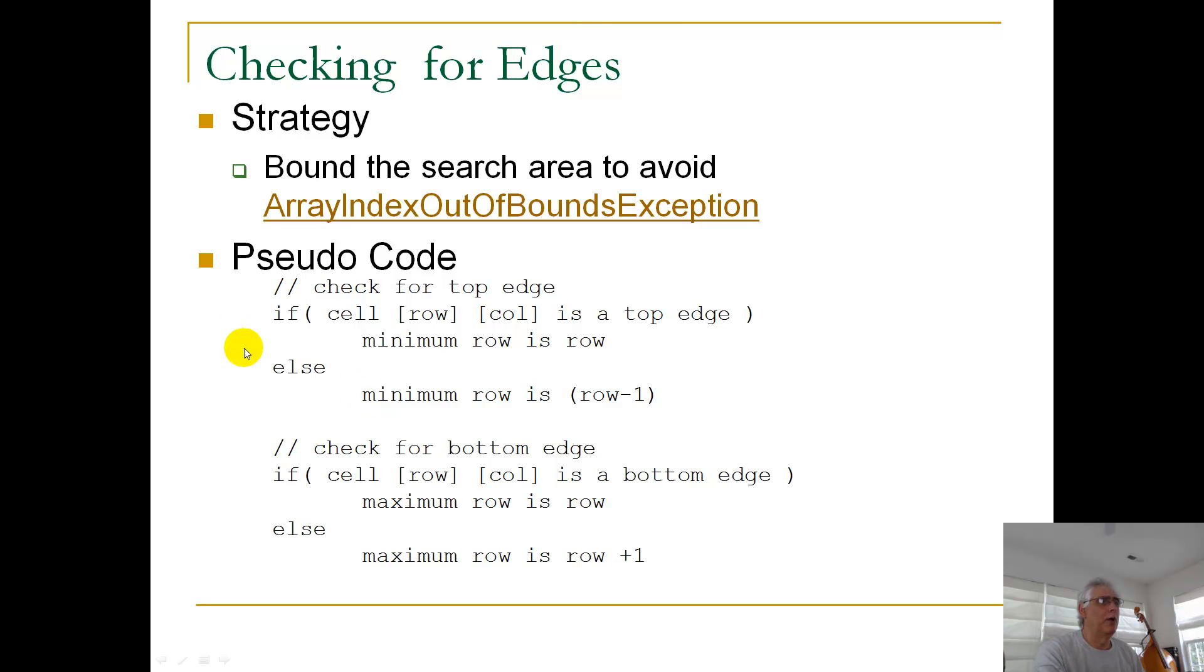So what are we going to do? Your pseudocode looks like this, and truth be told, the code you're actually going to write, not hugely different. So you're moving through and I want to check if my cell, my cell of interest, located at row col, is a top edge.